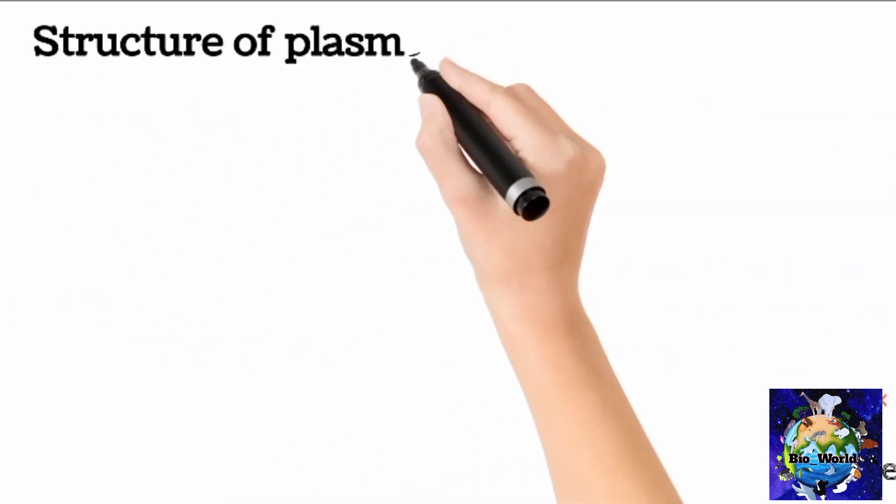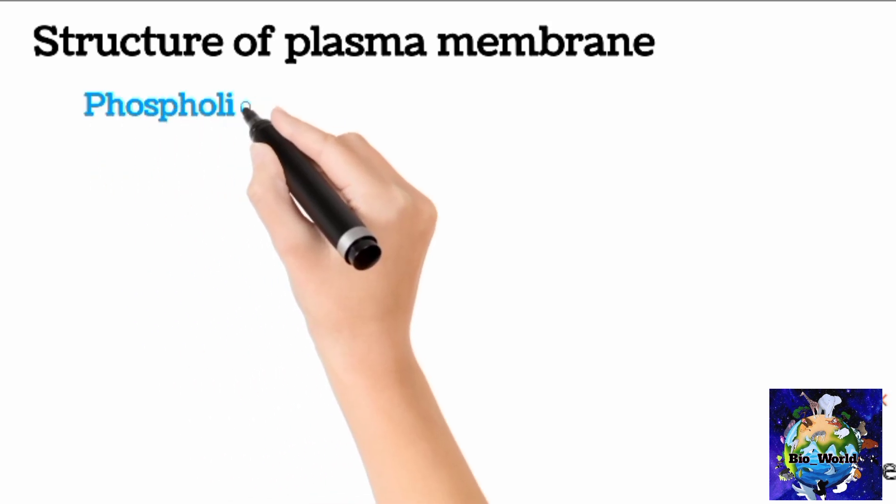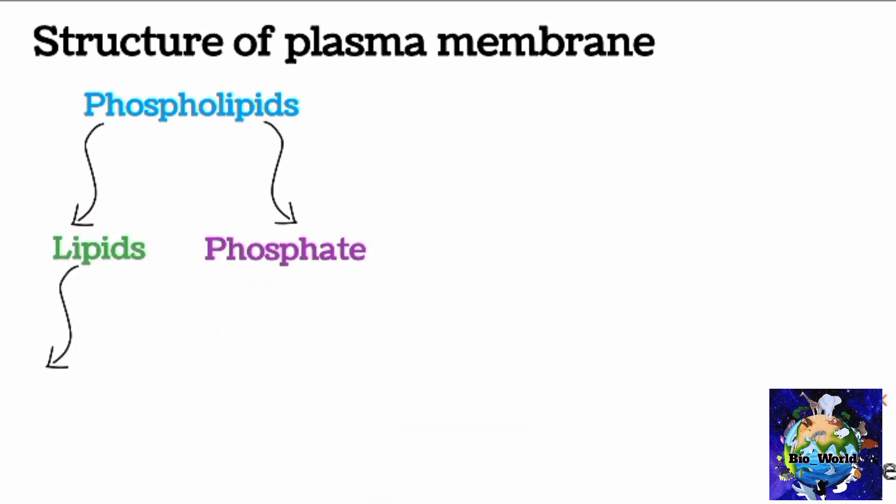Now comes to what the structure of plasma membrane. Plasma membrane is composed of phospholipids. If we take a look at the chemical structure of phospholipids so then we can understand better. Phospholipid molecule is composed of lipid and phosphate molecules. Lipid has further two constituents, one glycerol and two fatty acids molecules.